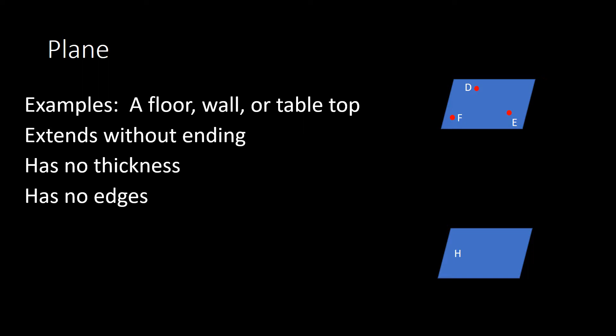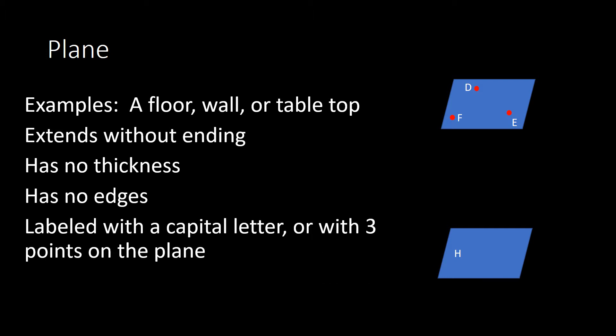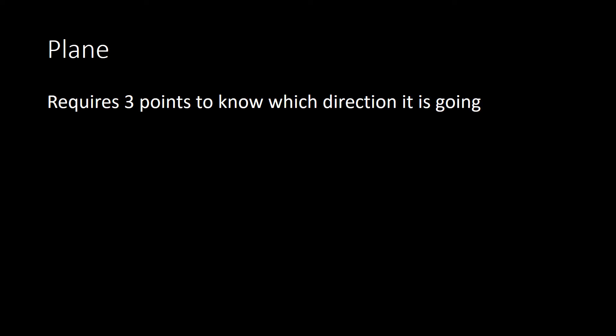As far as naming a plane, there are two ways. The first way is we can use three points on the plane to name the plane. We see here points D, E, and F — we can name this as plane DEF. The order does not matter; we can say plane DEF, EDF, or FED. The other way is with just a capital letter, so that would be called plane H. With a plane, just like a line needed two points to know which way it was going, a plane needs three points to know which direction it is going.